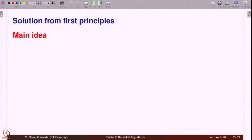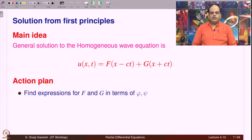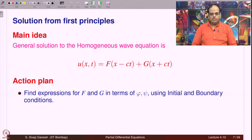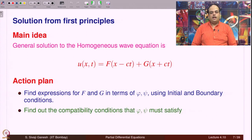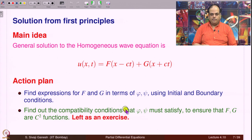The solution from first principles uses u(x,t) = f(x − ct) + g(x + ct). The plan is to find what f and g are, expressing them in terms of φ and ψ using initial and boundary conditions, and finding the compatibility conditions φ and ψ must satisfy so that f and g are C² functions, making u a classical solution. This is left as an exercise — we have done exactly the same exercise with different boundary conditions before.